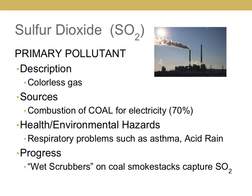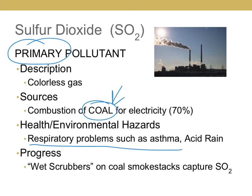The next pollutant is also a primary pollutant — above where it says sulfur dioxide, write 'primary.' Sulfur dioxide is a colorless gas that comes mainly from burning coal for electricity. A very common health problem for almost every pollutant except lead is respiratory problems such as asthma. On an FRQ, write asthma specifically, because just writing 'respiratory problems' may not be specific enough for full credit.